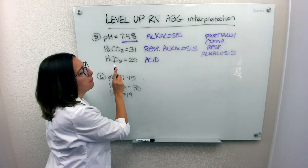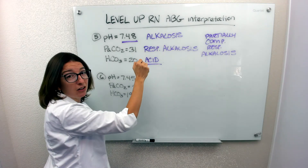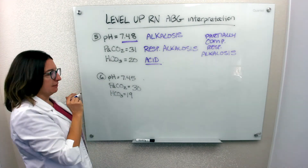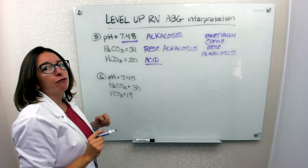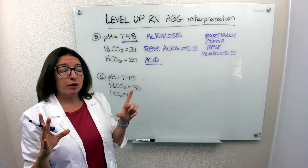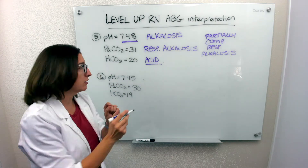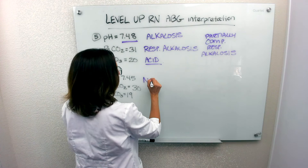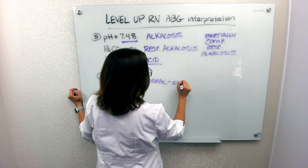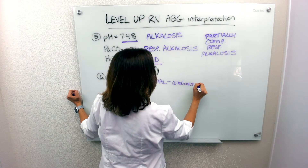The metabolic system is trying to compensate — it's acidic, trying to compensate for the alkalosis — but it's not quite getting the job done. Number 6: pH is 7.45, which is actually within range. Our range is 7.35 to 7.45, but it's on the alkalosis side of things.